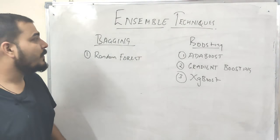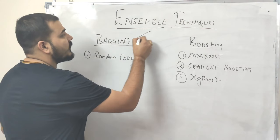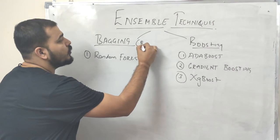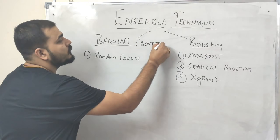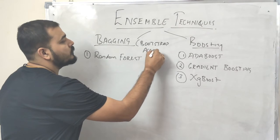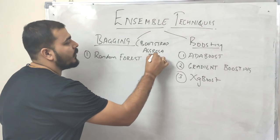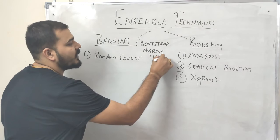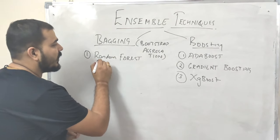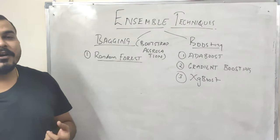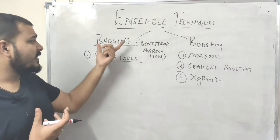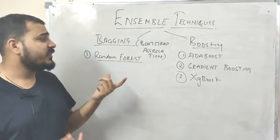We basically have two techniques: one is bagging and the other one is boosting. Bagging is also called as bootstrap aggregation. One of the techniques in bagging is basically called as random forest. In random forest, we basically use multiple decision trees. I'm going to first discuss about bagging, and in my next session I'll be discussing about random forest.